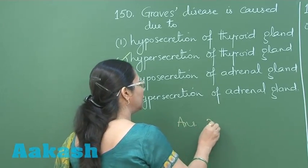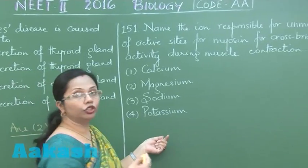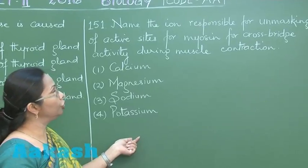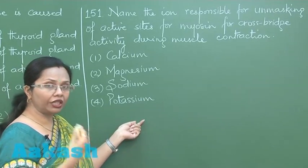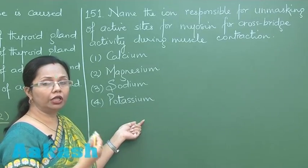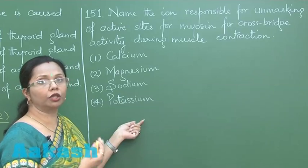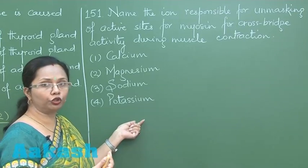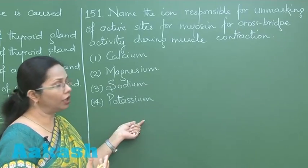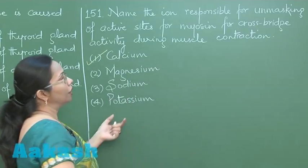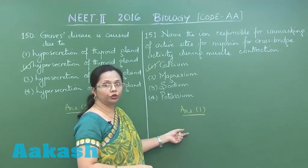Question 151: The ion responsible for unmasking the active sites of actin during muscle contraction. The actin sites are masked by tropomyosin, which is attached to troponin. During muscle contraction, calcium ions are released from the sarcoplasmic reticulum, bind with troponin, causing a conformational change that shifts tropomyosin and unmasks the actin sites. The answer is option 1 — calcium ions.